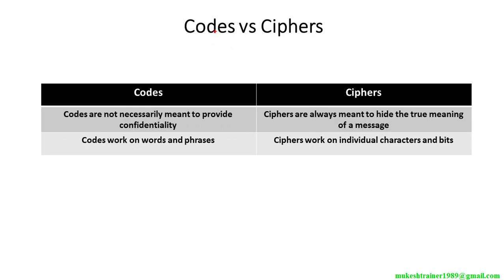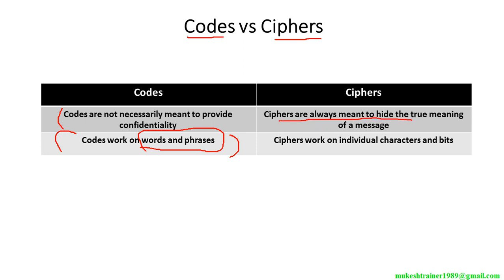Next is codes versus ciphers. Codes are not actually for providing confidentiality; a code does not work on words and phrases — if you are using words and phrases, a code will not help there. But ciphers are meant to hide the meaning of a message. Cipher works on individual characters and bits.